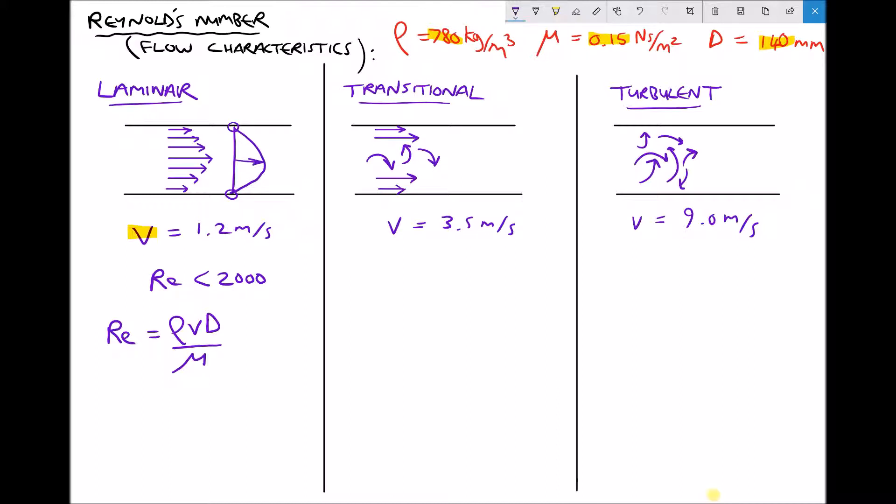So let's calculate our Reynolds number. We have a density of 780, a fluid velocity of 1.2, and a pipe diameter of 140 millimetres. Just take care here because we need to express that in metres as 0.14. We have a viscosity of 0.15. When we run all of that through the calculator, we get a Reynolds number equal to 874 accurate to the nearest whole number.